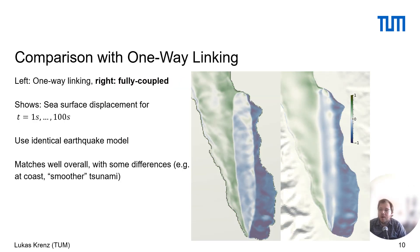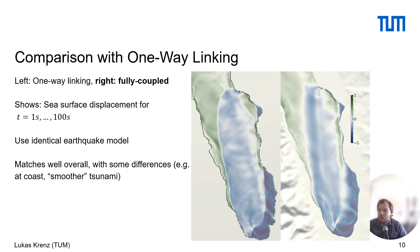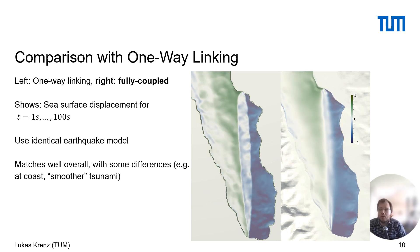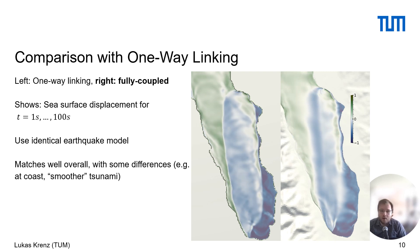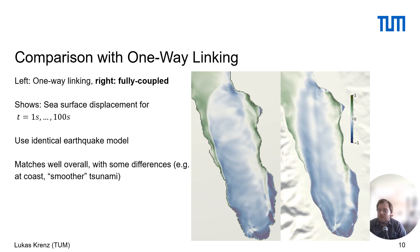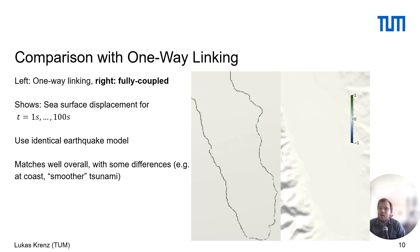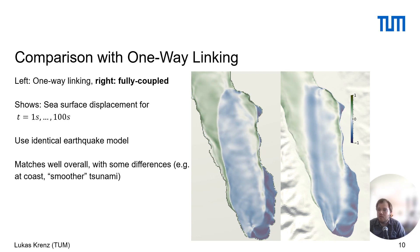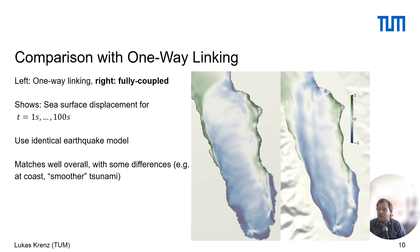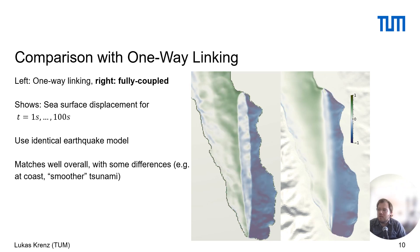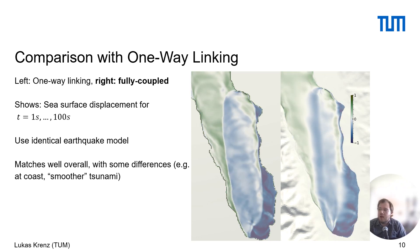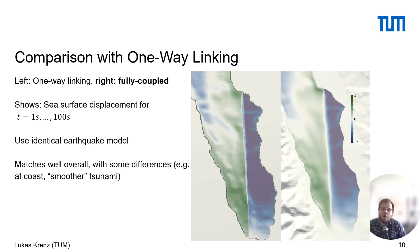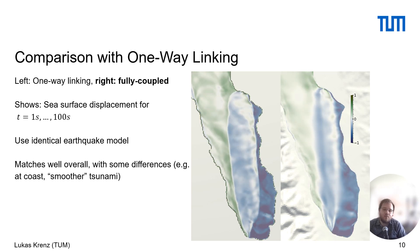Let me show the comparison with one-way linking. On the left we have the one-way linking, which is the reference model, and on the right our proposed fully-coupled model. Both use the same earthquake model but a different tsunami model; for one-way linking we use a standard shallow water equation solver. Shown is the sea surface displacement between 1 and 100 seconds. Both models have a pretty similar result, though there is some difference at the coast — the tsunami is a bit smoother in our case. We are currently working on determining where this difference comes from.